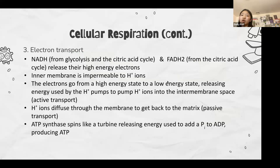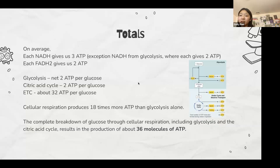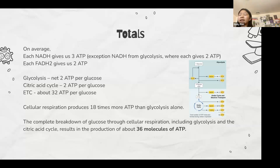The electron transport chain is where most of the ATP is produced. The next slide shows the totals for each stage of cellular respiration. Please note that the electron transport chain doesn't always produce 32 ATP per glucose — it can vary.